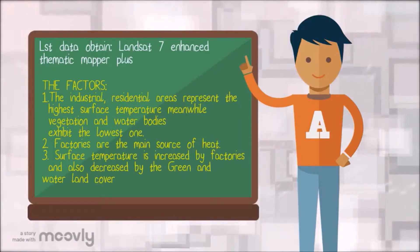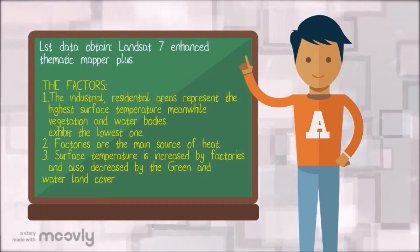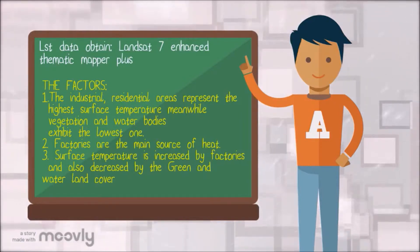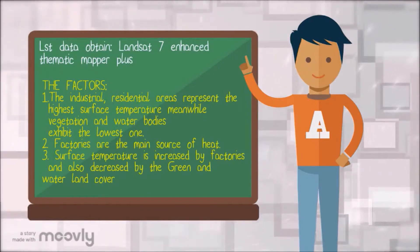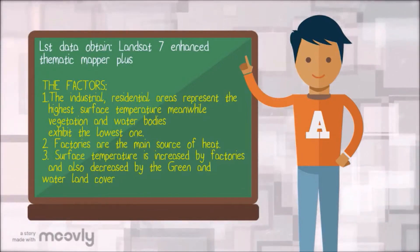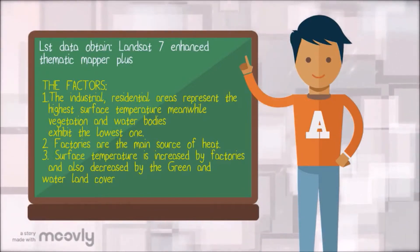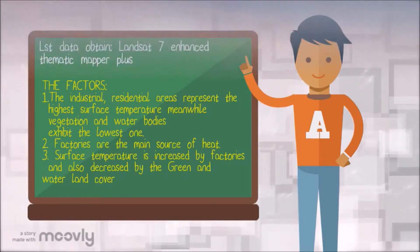Factories are the main source of heat. So the surface temperature is increased by factories and is also decreased by green and water land cover.